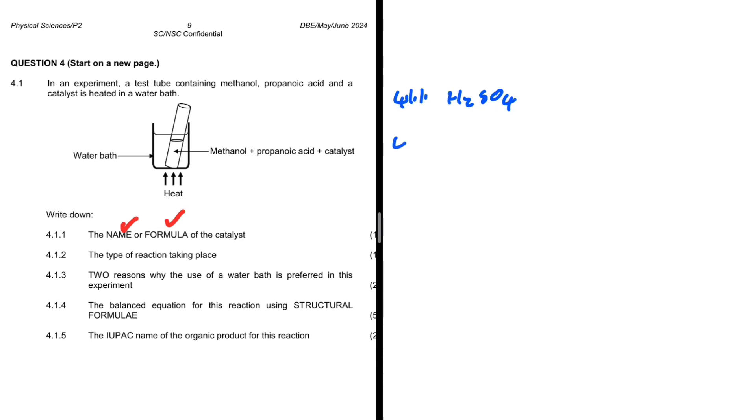But in some instances the question would say the name, and then if you write H2SO4 it would be wrong, or it says the formula, in which if you write the name it would be wrong.